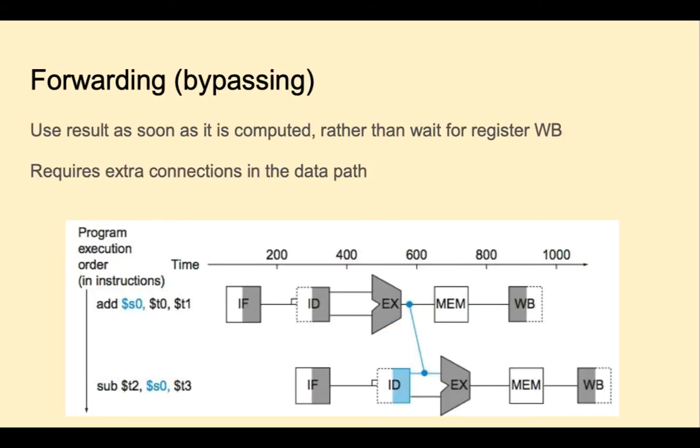One thing we can do to avoid having the two pipeline stalls is forwarding or bypassing. So instead of waiting for the register to be written to the register file, we could go ahead and grab it as soon as it comes out of the ALU and forward it to the next instruction. This will require extra connections in the data path.